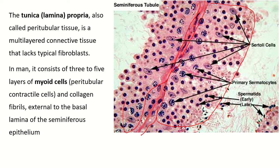The tunica propria contains a cell called the myoid cell. This is the Sertoli cell — Sertoli cells are present throughout the whole thickness of the seminiferous tubule. You can see the Sertoli cell contains light stained nuclei with prominent nucleolus, and the shape of the nucleus is oval.